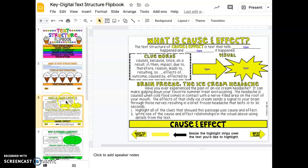Cause and effect is the text structure that tells what happened and why it happened. Something causes something and then there's an effect. When you're thinking of cause and effect, you're going to see clue words in your text like causes, because, since, as a result, if this happens then that happens, impact, due to, therefore, reason, leads to, resulting, effects of, outcome, caused by, and affected by.